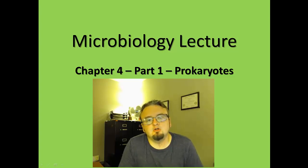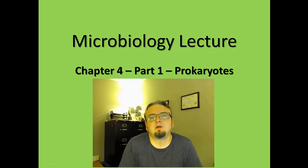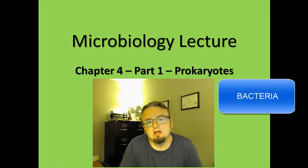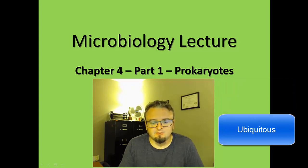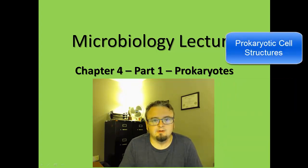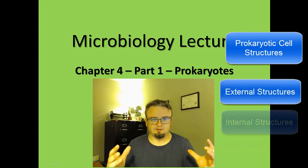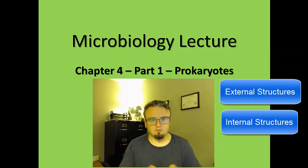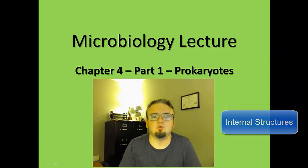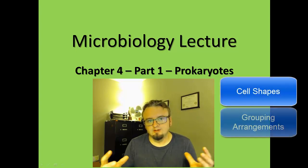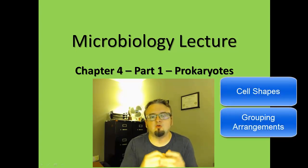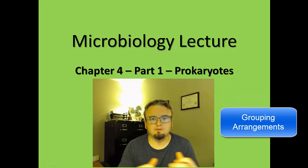We're doing chapter four today and we're going to look at it in two parts. In part one, we're going to take a look at the prokaryotic group we call the bacteria. If you remember from chapter one, these are one of the most common types of microbes and tend to be found almost everywhere. We're going to look at external structures, internal structures, cell envelopes, cell shapes, and the ways these microbes group together.